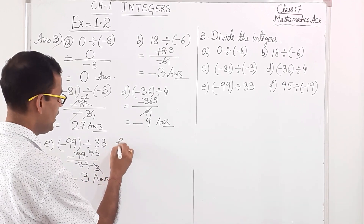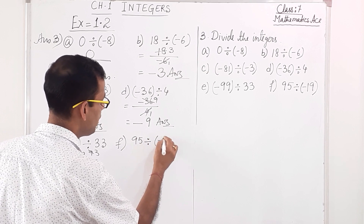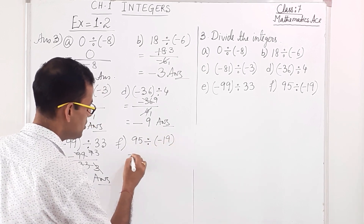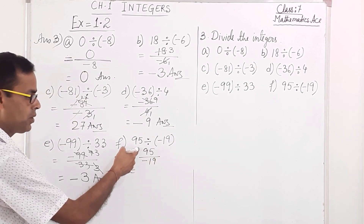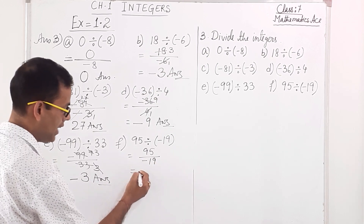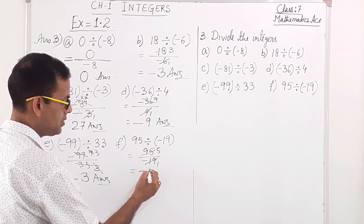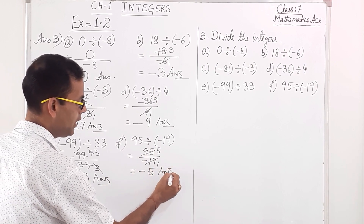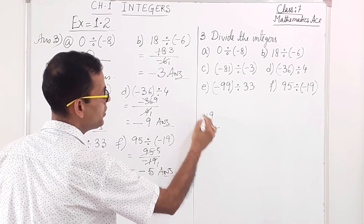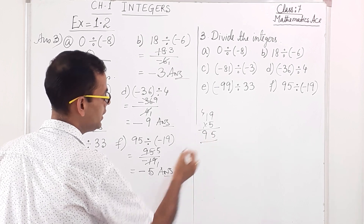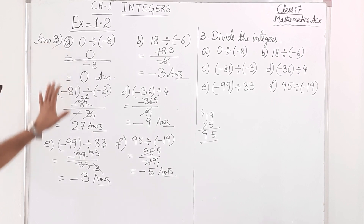Last one, F: 95 divided by minus 19. Writing it as 95 over minus 19 — positive and negative, different sign — so the answer will be negative. 19 into 5 equals 95. So the answer is minus 5. Question number 3, all solutions done.